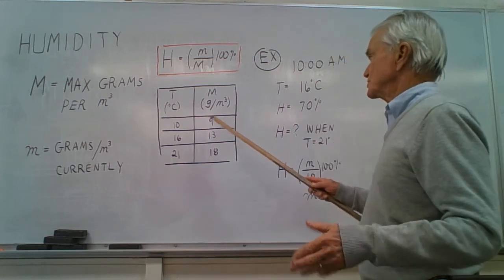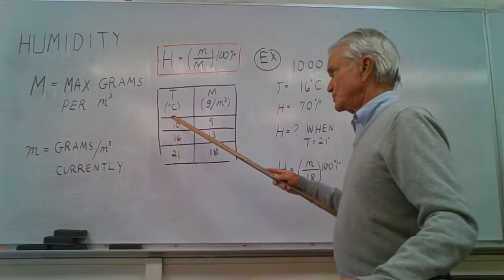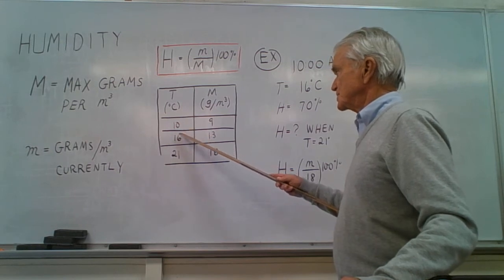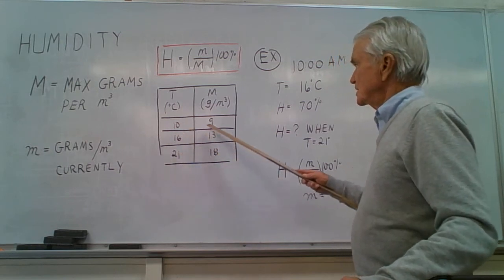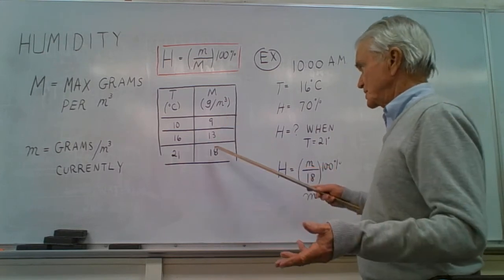So this table shows how as the temperature outdoors, the air temperature increases from 10 to 16 to 21, the maximum number of grams allowed in a cubic meter likewise increases.